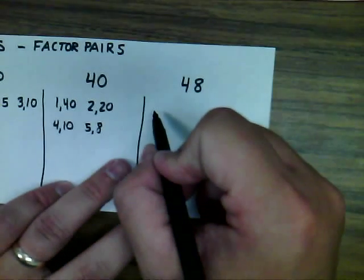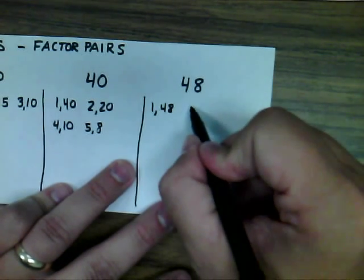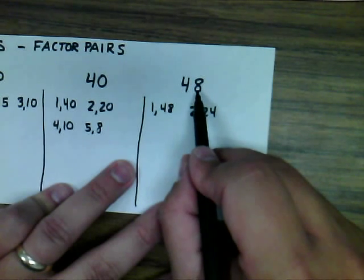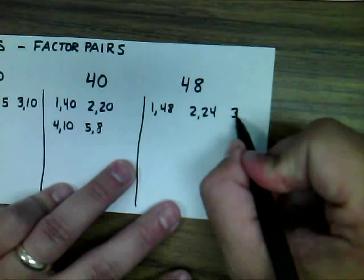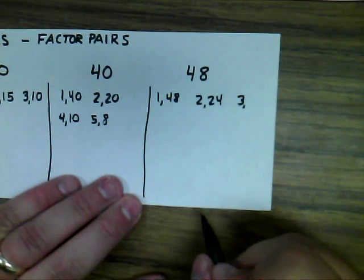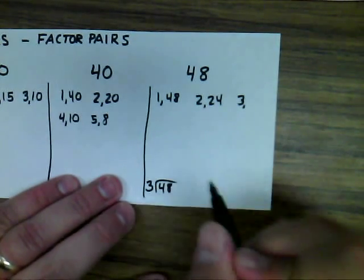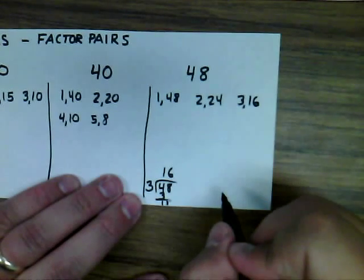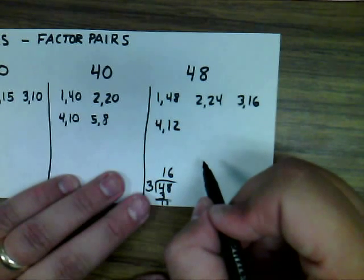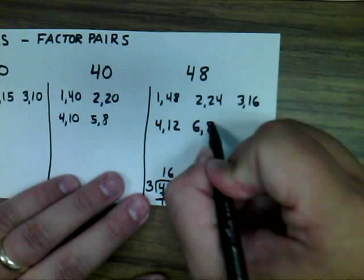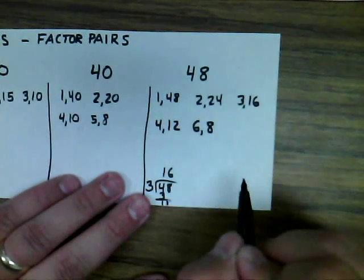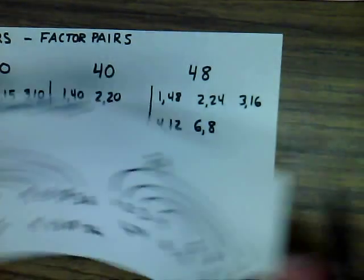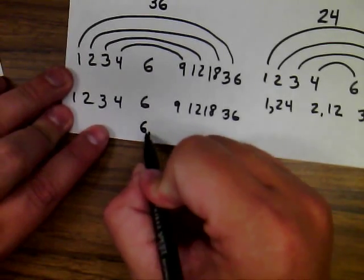For 48: 1 and 48, 2 because it's even — 2 times 24. For 3, I'll use divisibility rules from the last unit: 4 plus 8 is 12, so 3 definitely goes into 48. If I don't know the other factor, I'll divide 48 by 3, and sure enough it goes in 16 times — so 3 times 16 is 48. Then 4 times 12, 5 does not go into 48, 6 times 8. Since 7 is the only number between 6 and 8, I know there are a total of 10 factors for 48, or 5 factor pairs. For a number like 36, you would list 6 times 6 as a factor pair.